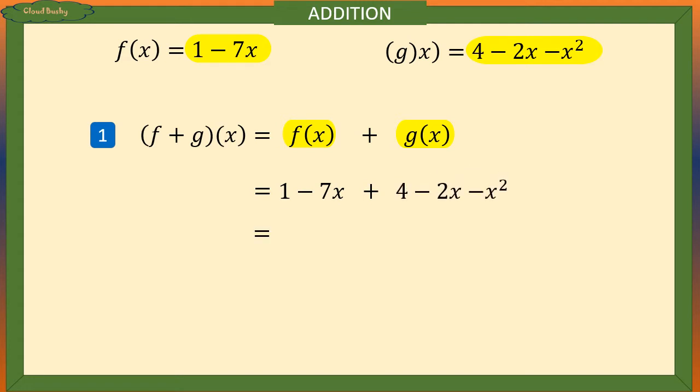Next we collect like terms starting with minus x squared minus 7x minus 2x plus 1 plus 4.